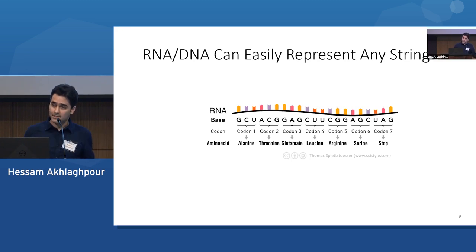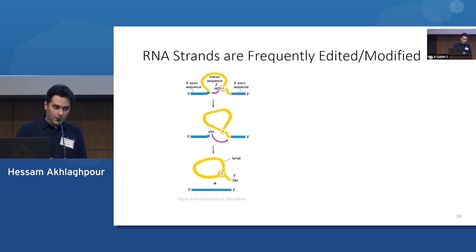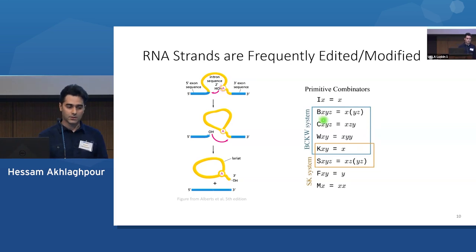But it's not just about representing combinatory logic. It's also about executing the application rules. So we know that RNA strands are frequently edited and modified. For example, one of the most common, most well-known editing rules is splicing, where a certain part of the RNA strand is excised out of a strand after it's transcribed. So the question is, can we imagine editing rules that correspond to a set of application rules which form a universal primitive set?